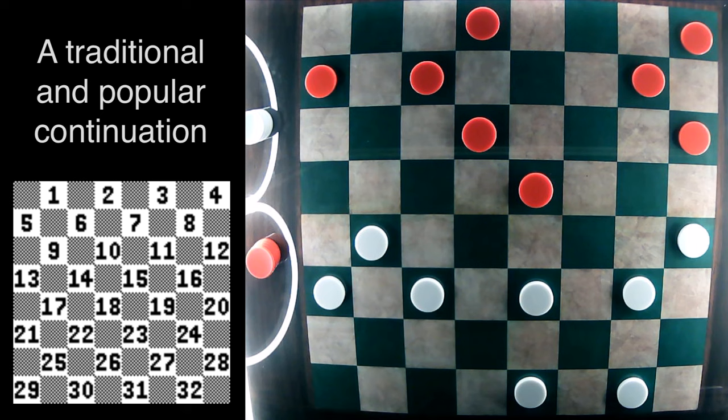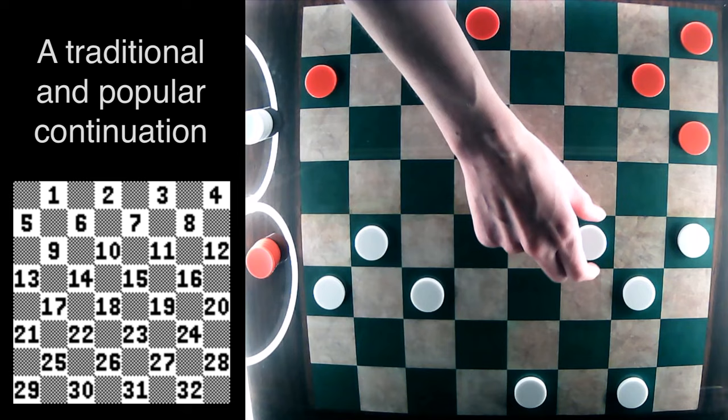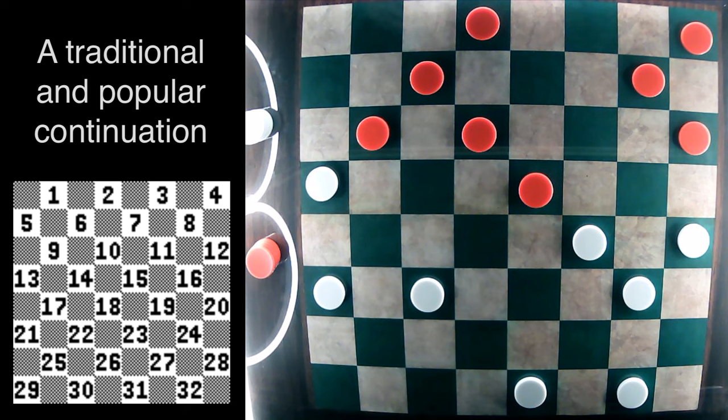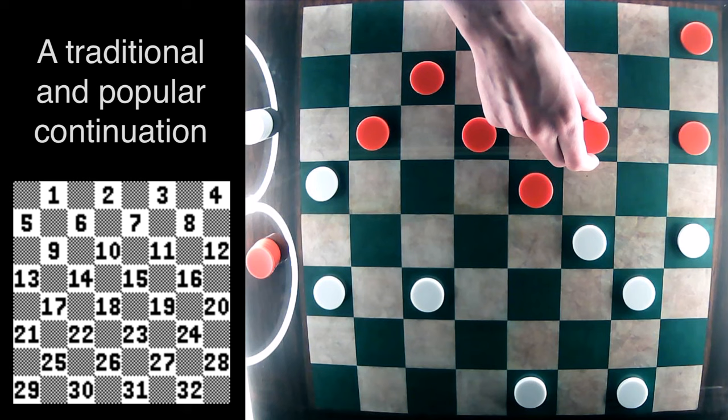The natural 27-23. Red striking into the 15 square. And then white flanking with 23-19. Red is going to play 5-9. Again, the natural 17-13. And again, a lot of these moves can be interchanged.